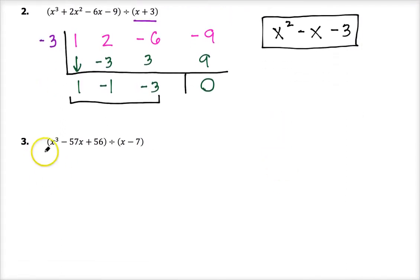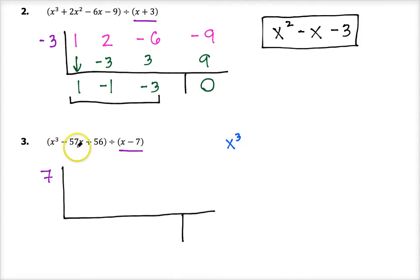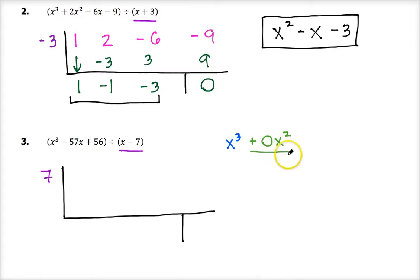Let's try number 3: x cubed minus 57x plus 56 divided by the quantity x minus 7. I'll draw my inverted division house. If I set x minus 7 equal to 0, I get x equals 7, so that goes here. Before I put my coefficients in the top row, notice something: writing out the dividend in standard form, I have x cubed, then the next term is minus 57x. Normally between an x cubed term and an x to the first term there would be an x squared term. There isn't in this one, but I need to include that coefficient, so I'll write a plus 0x squared as my placeholder — just like we do in long division.